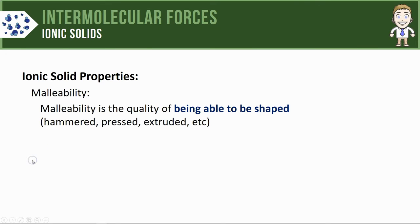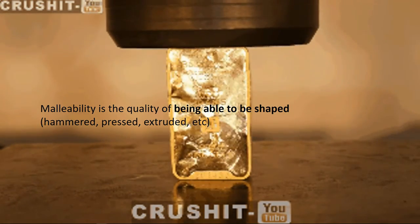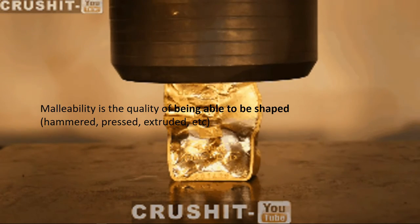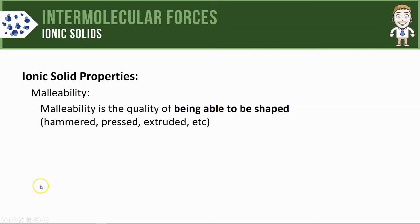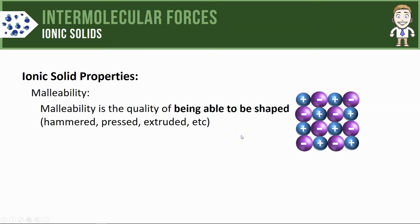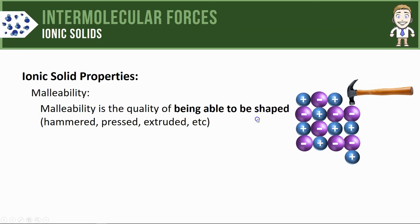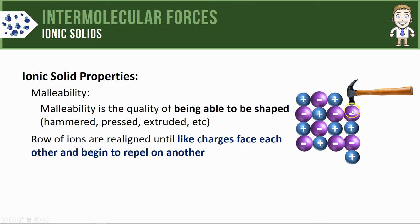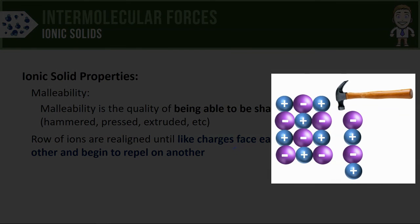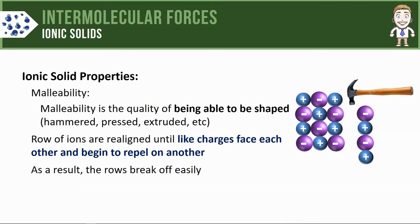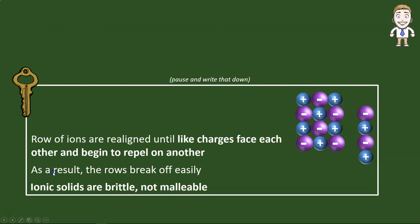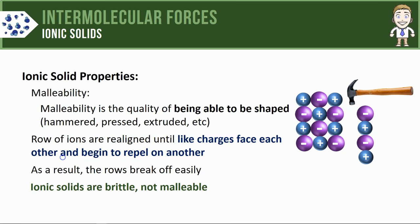Lastly, we'll take a look at a property called malleability — the quality of being able to be shaped by hammering, pressing, extruding, etc. Here you see a gold bar being crushed because gold is very malleable. For ionic solids, when pressure is applied, a row of ions gets realigned so that like charges face each other — negatives line up with negatives and positives with positives. Those like charges repel one another and that entire row breaks off. Since this happens quite easily, we say that ionic solids are brittle and not malleable.